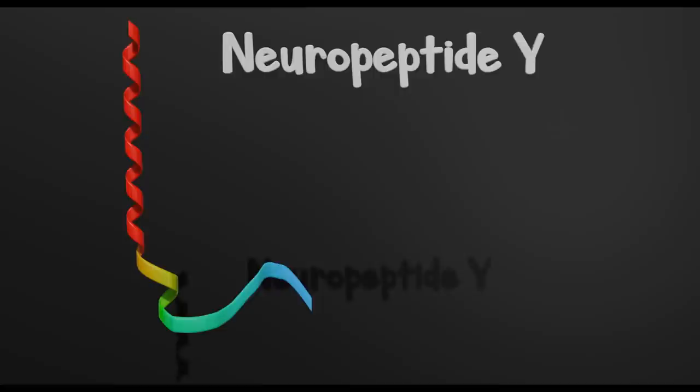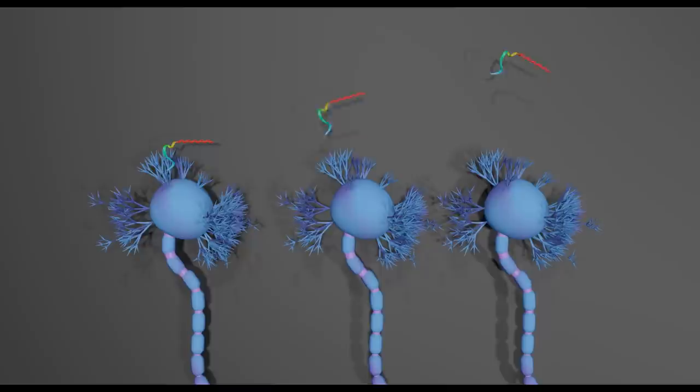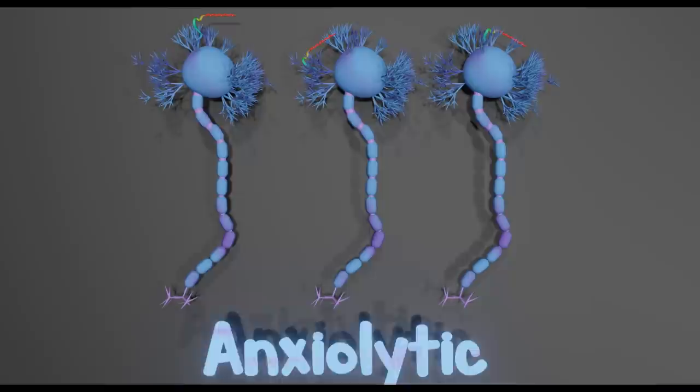We're going to focus on this neurotransmitter, neuropeptide Y. NPY has a bunch of different roles. But in the amygdala, NPY is like the chill out my dude neurotransmitter. The more neuropeptide Y that binds with neurons in the amygdala, the lower the sensation of anxiety. This is called an anxiolytic effect.